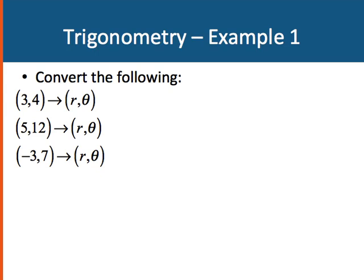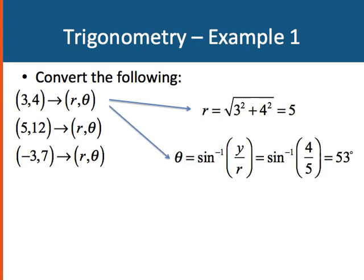Let's look at some examples. Let's convert the following rectangular coordinates to plane polar coordinates. We'll start with (3, 4). The first thing we want to do is find r. Using the Pythagorean theorem, r is equal to the square root of 3 squared plus 4 squared. That's equal to 5. And then, to figure out theta, I can say theta is the arc sine of y over r. That would be the arc sine of 4 fifths, which is 53 degrees.